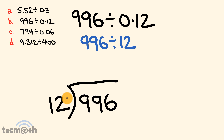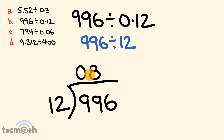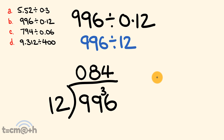First off, how many times is 12 going into 9? Well it doesn't, so we're just going to carry that 9 along. Now we look at how many times does 12 go into 99? 12 goes into 99 eight times — 12 times 8 is 96 — so we're going to have 3 left over. Next, how many times does 12 go into 36? It goes in evenly 4 times. So there's the first interim part of our answer.